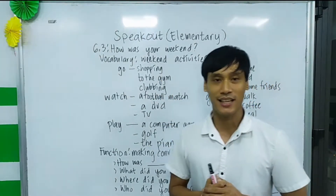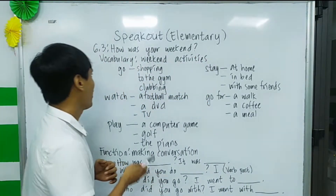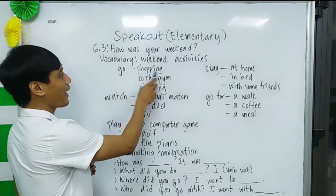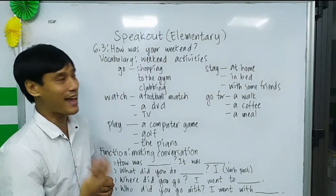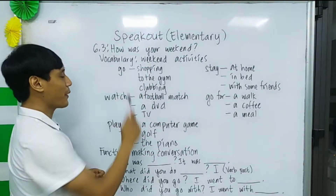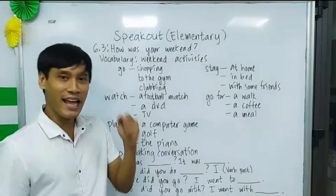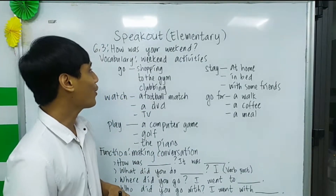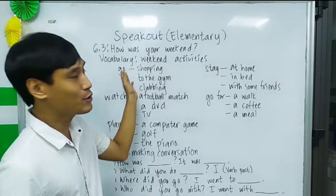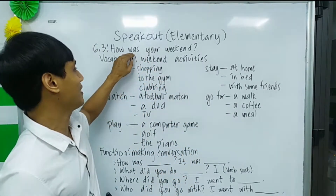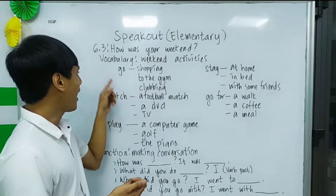The vocabulary for this chapter is about weekend activities. We are going to practice the pronunciation of verb and noun combinations. First is the verb 'go' — we can say go shopping, go to the gym, go clubbing. Remember, if someone asks 'how was your weekend,' your verb should be in the past, so you would say: 'It was great, I went clubbing.'